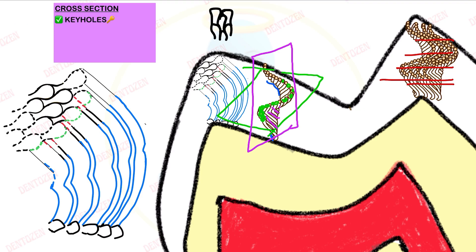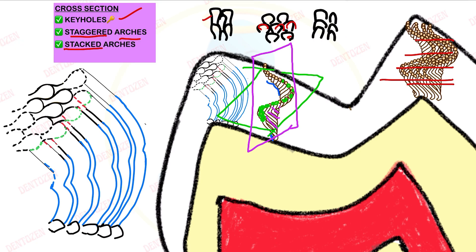If many such rows are drawn, the enamel gives a layered appearance. When we take cross sections at different planes, we can see various patterns: keyhole-shaped appearance, enamel rods appearing as staggered arches arranged as a series, stacked arches arranged one over another, or irregular patterns. All these appearances can be seen in cross section under the electron microscope.